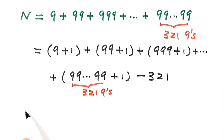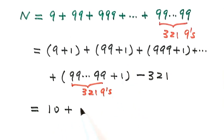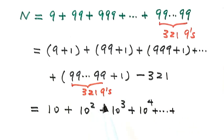The first term equals 10. The second term is 100, that's 10 squared. The next one is 1000, that's 10 to the third. So the next one is 10 to the fourth, and so on. Then minus 321.